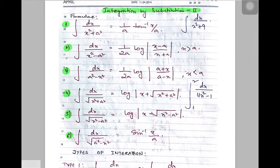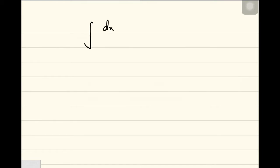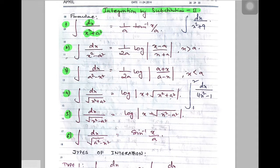The first formula is integration dx divided by x squared plus a squared. This formula is similar to the standard formula where we have integration dx divided by x squared plus 1, and the answer was tan inverse x. So this formula is similar to that. It says integration dx divided by x squared plus a squared and the answer is 1 by a tan inverse x by a plus c. You have to add plus c to every formula.